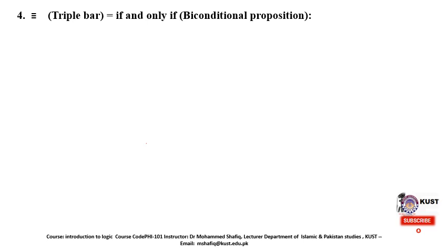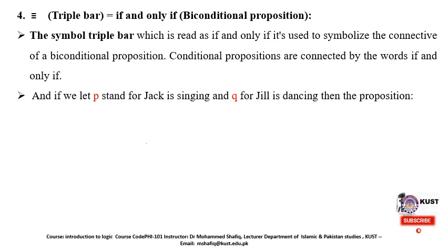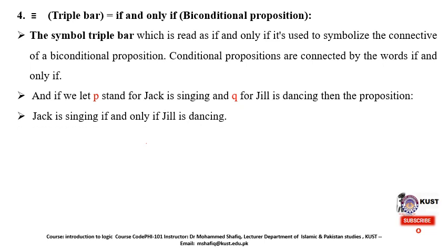The fourth symbol is the triple bar, used for biconditional propositions. Biconditional propositions are read as 'if and only if.' It is used to symbolize the connection between biconditional propositions, which are connected by the words 'if and only if.' Using P for 'Jack is singing' and Q for 'Jill is dancing,' the proposition 'Jack is singing if and only if Jill is dancing' is expressed symbolically as P ≡ Q (P triple bar Q).